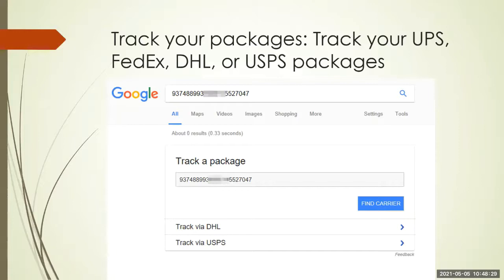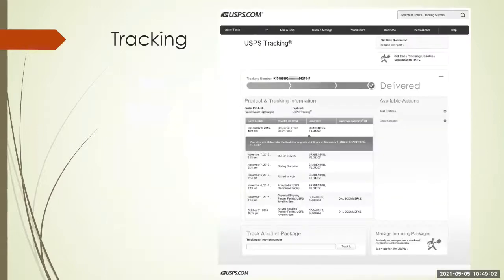Did you know you can track your packages easily without going to UPS, FedEx, DHL, or the USPS websites? Just type the tracking number in your Google search box — or any search engine. If it's certain numbers, Google knows it could be a DHL or USPS number and will ask which one you want. You click on it and it gives you the tracking information. You don't have to go to each carrier's site — just put the tracking number in your search box and it will figure it out.